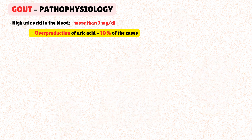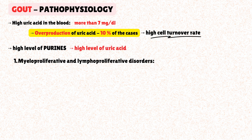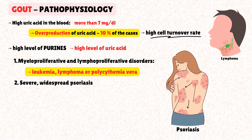One of the biggest sources of overproduction is a high cell turnover rate. Conditions with high rates of cell death and replication lead to increased turnover of purines. As these purines are metabolized, they are converted into uric acid. For instance, myeloproliferative and lymphoproliferative disorders like leukemia, lymphoma, or polycythemia vera cause rapid proliferation of blood cells, generating a large load of purines and leading to hyperuricemia. Severe widespread psoriasis, with its rapid turnover of skin cells, can also increase the purine load.